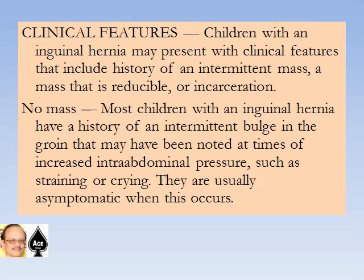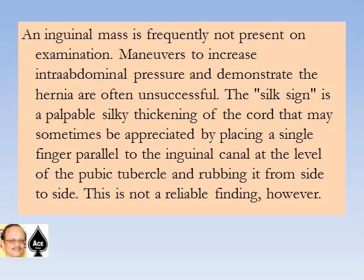Children with inguinal hernia may present with a history of an intermittent mass, a reducible mass, or incarceration. Most children have a history of an intermittent bulge in the groin noted at times of increased intra-abdominal pressure such as straining or crying. An inguinal mass is frequently not present on examination. The silk sign is a palpable silky thickening of the cord, appreciated by placing a finger parallel to the inguinal canal at the pubic tubercle and rubbing side to side — this is not a reliable finding.